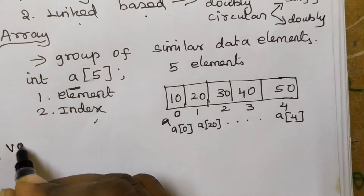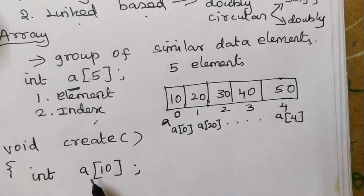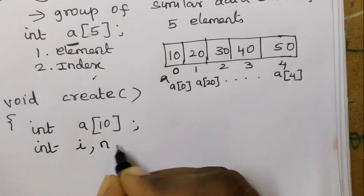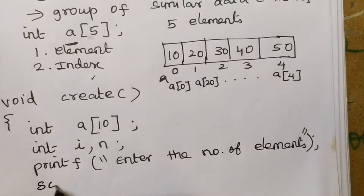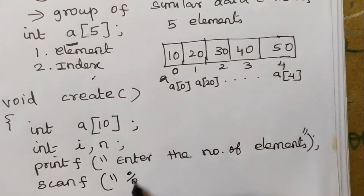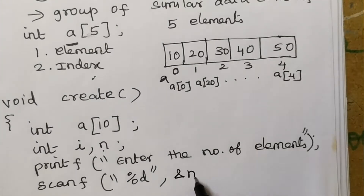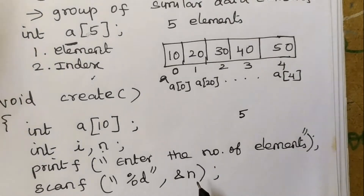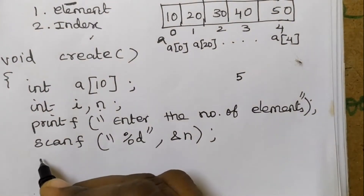Now we are going to see the creation of the array. We declare array a[10] and use two variables: i and n. We enter the number of elements, which is done using scanf with %d since n is an integer. If we give 5, we can store totally 5 elements in this a[10] array. Now we are going to write the loop.